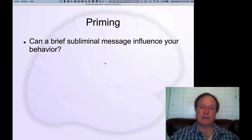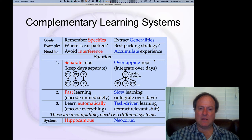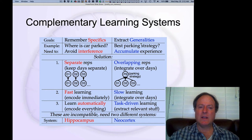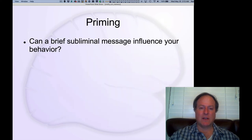The last topic is looking at the effects of individual small weight changes. In this neocortical generality learning system, even though we think it has a relatively slow learning rate, it can still demonstrate impacts from single trials of learning. This is the key point of these priming studies.